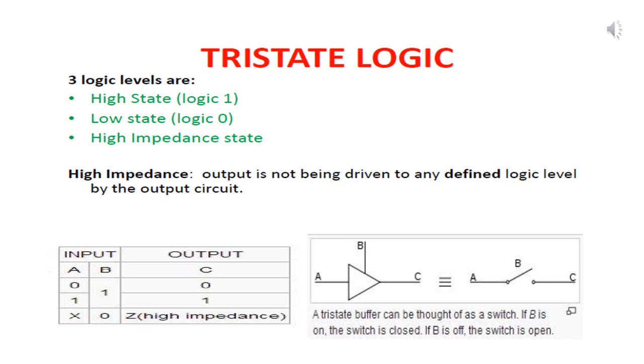The tri-state buffer has an input A, output C, one control input B.